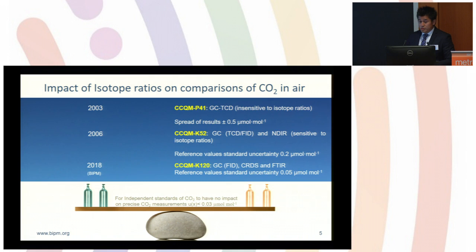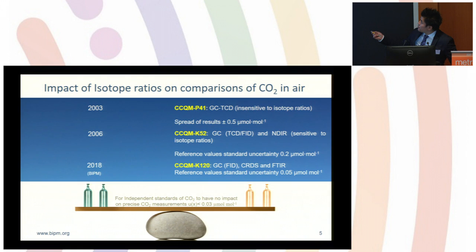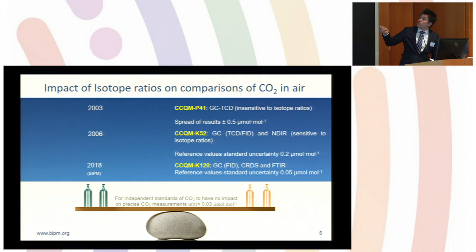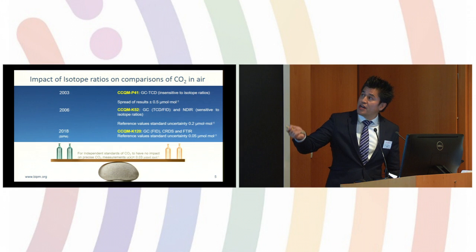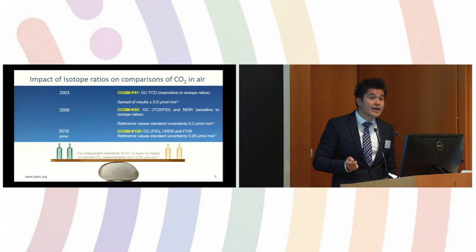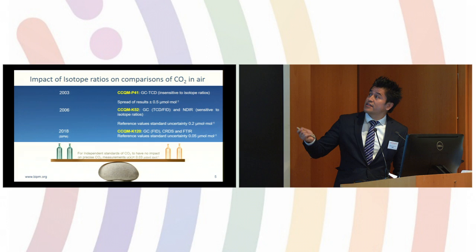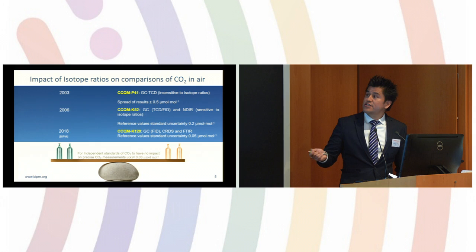In 2003, we organized the CCQM K41 comparison. That is very interesting because in this comparison we used exclusively GCTCD, and the spread of the results was around 0.5 micromole per mole. Three years later, there was another comparison where we used GCFID and optical systems started to take over. The uncertainties dropped nearly to 0.2 micromole per mole. And last year, the BIPM organized the CCQM K120, where nearly half of the institutes used optical systems. The reference value standard uncertainty dropped to 0.05 micromole per mole.